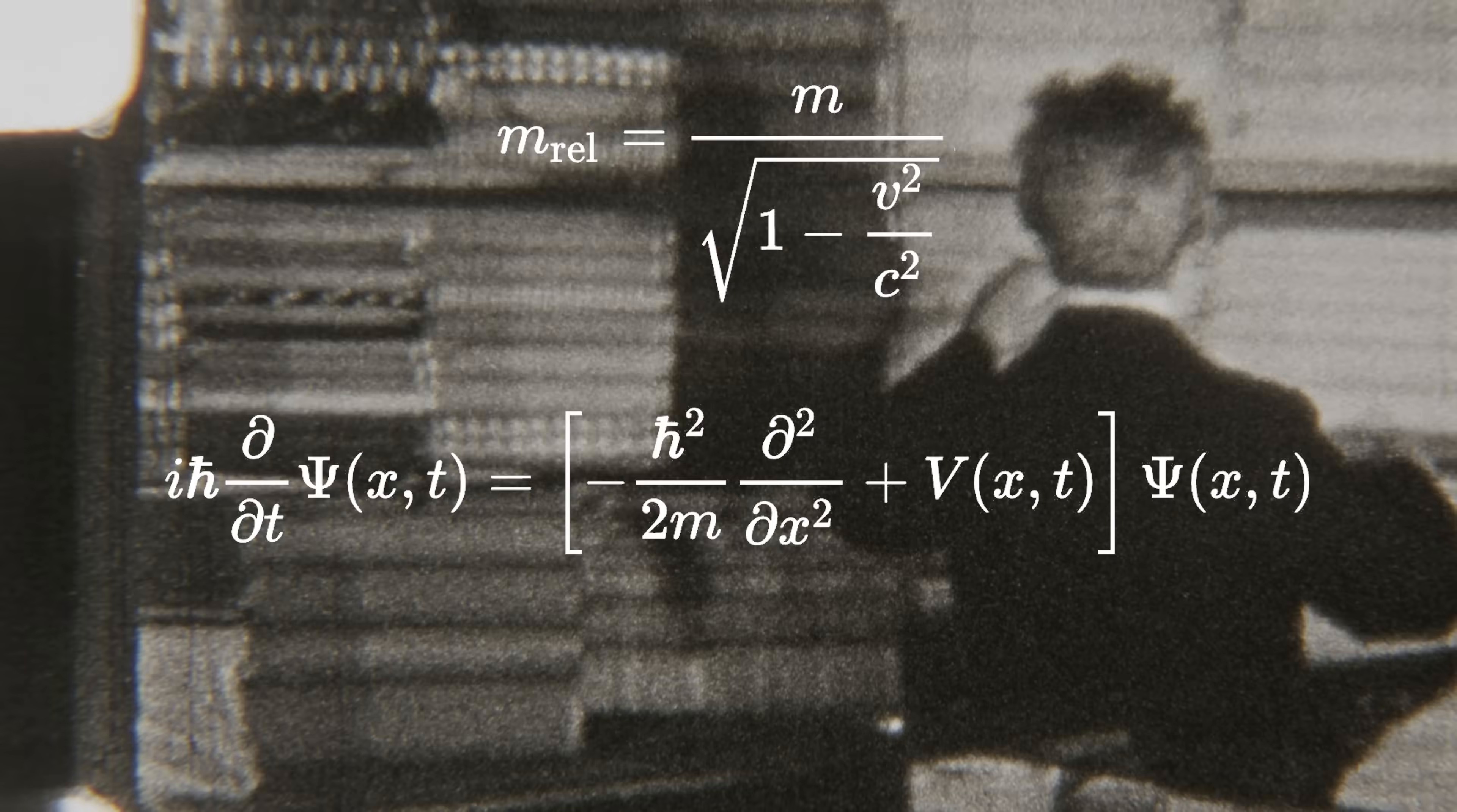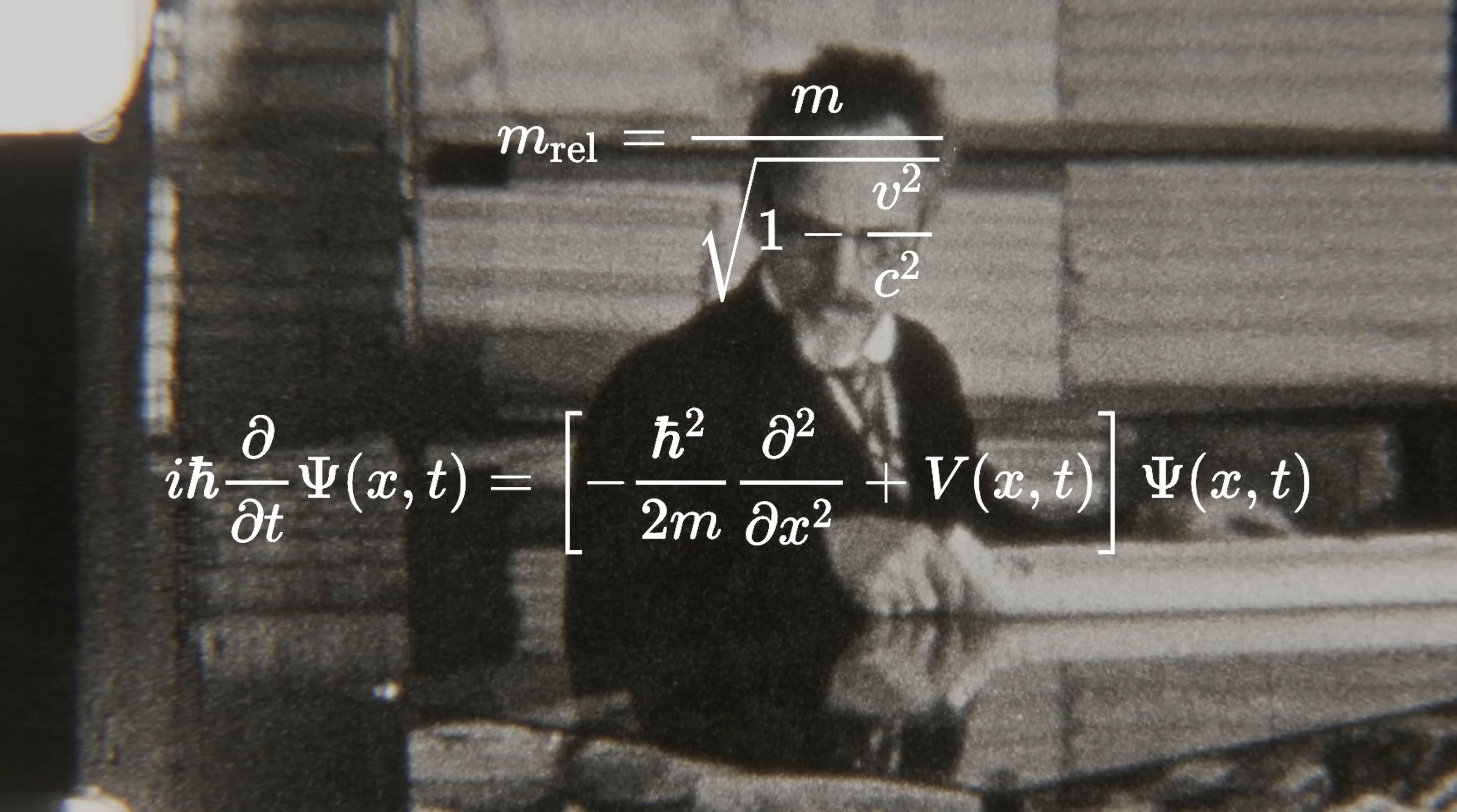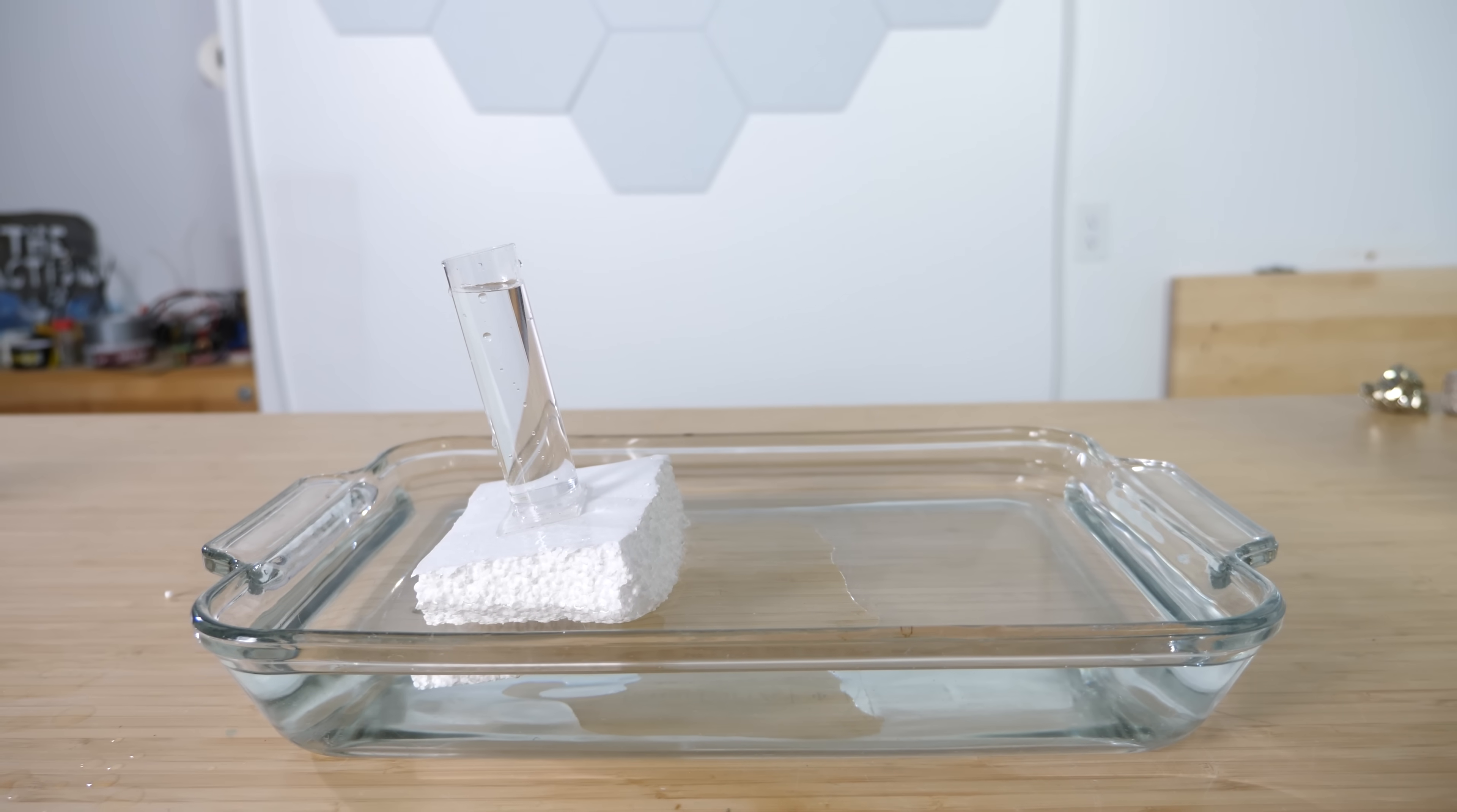This answer required 80 years of research combining special relativity and quantum mechanics to fully understand. Today I'm going to show you how things that we don't typically think of as magnets are actually tiny magnets, and how we can use this knowledge to make room temperature levitation without superconductors.